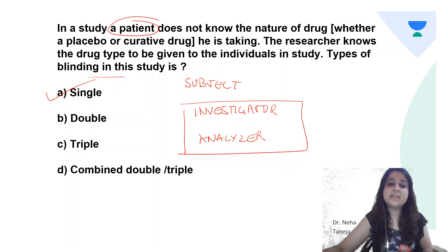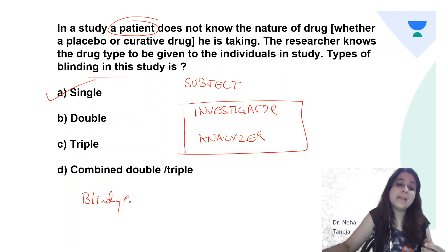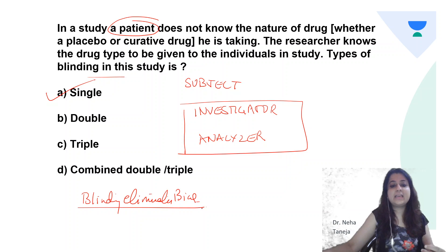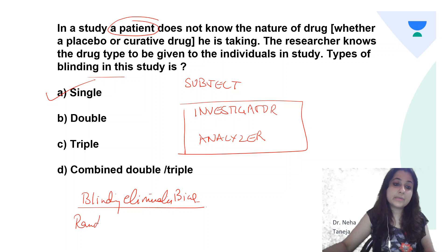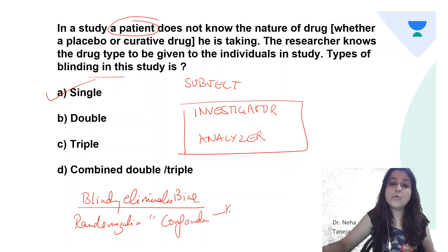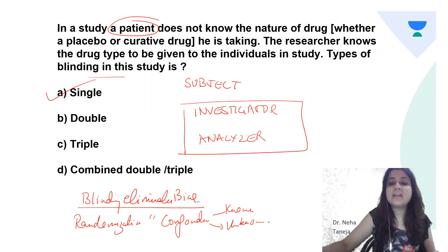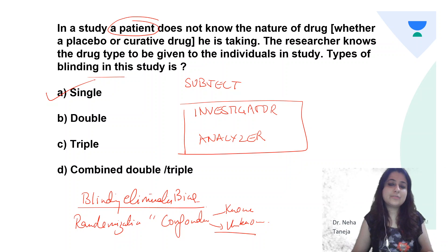Blinding is done to eliminate bias. Randomization, just to revise, eliminates confounders — both known as well as unknown. Matching eliminates unknown confounders. These were a short set of PYQs. I hope you benefited from these sessions. Thank you so much for watching.